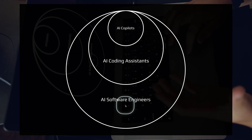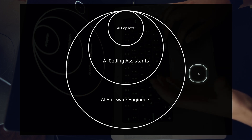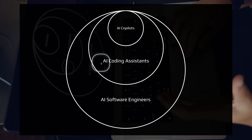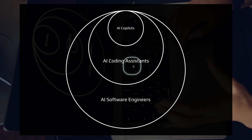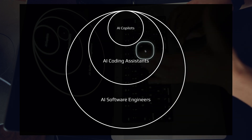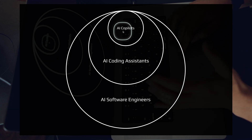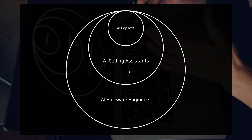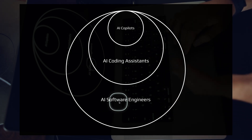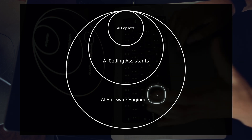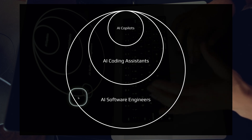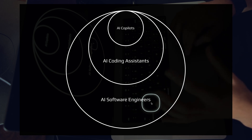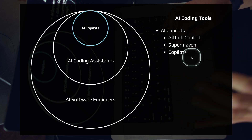At each level we increase the complexity and the AI autonomy of the tool. At the bottom level we have AI co-pilots, also known as AI autocompletes. At the second level we have AI coding assistants — a superset of co-pilot capabilities, with superior features. At the top we have AI software engineers. So at the bottom: co-pilots; then AI coding assistants; then AI software engineers.